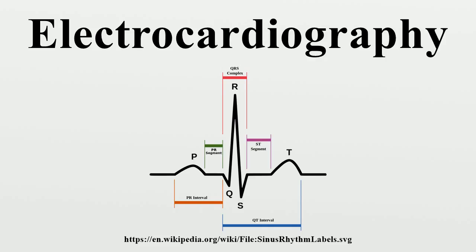Each of the 12 ECG leads records the electrical activity of the heart from a different angle, and therefore aligns with different anatomical areas of the heart. Two leads that look at neighboring anatomical areas are said to be contiguous. Any two precordial leads next to one another are also considered contiguous — for example, though V4 is an anterior lead and V5 is a lateral lead, they are contiguous because they are next to one another.